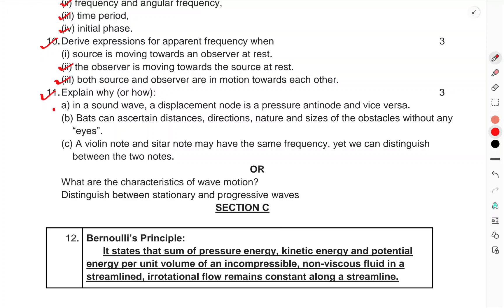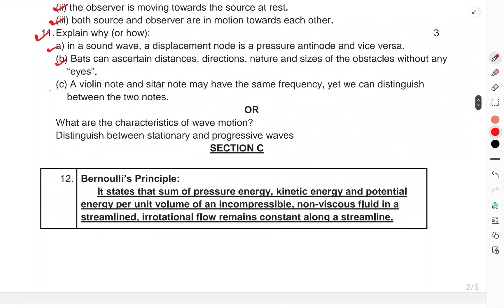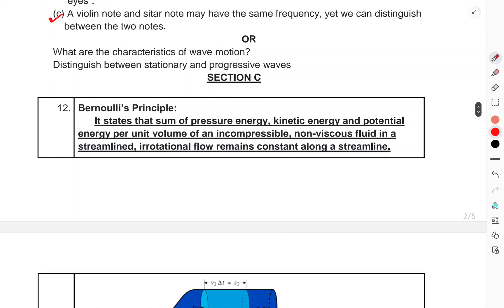Explain why and how in a sound wave, a displacement node is a pressure antinode and vice versa. Bats can ascertain distance, direction, nature, and size of obstacles without any eyes. OR, a violin note and a sitar note may have the same frequency, yet we can distinguish between the two notes. OR, what are the characteristics of wave motion? Distinguish between stationary and progressive waves.